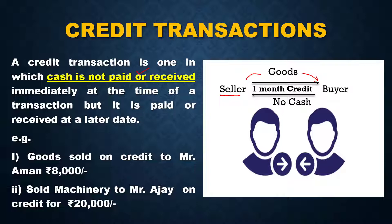The seller gives goods to the buyer but does not receive payment immediately. For example, goods sold on credit to Mr. Aman for rupees 8,000 — goods go but cash is not received. Similarly, machinery sold to Mr. Ajay on credit for rupees 20,000 — cash is not received immediately. These are credit transactions.